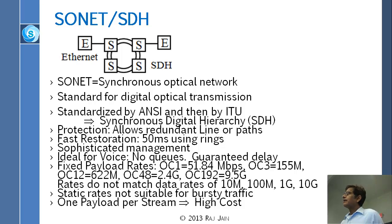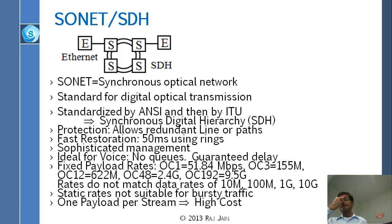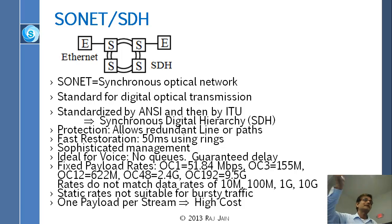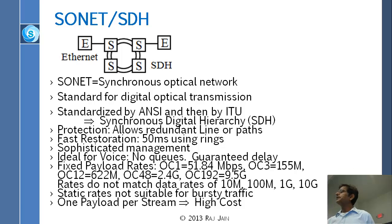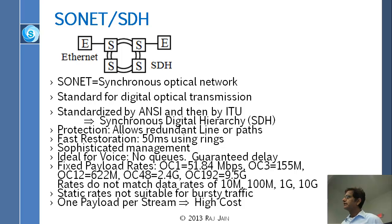The rates are multiples of 51.84 megabits. OC1 is 51.84, OC3 is 3 times that which is 155, OC12 is 12 times 51 which is 622, and so on. A useful trick: instead of 51.84, just remember 50. So when somebody says OC12, you say 622 because 50 times 12 is around 600. For OC192, 192 divided by 2 is 96, so we know it is 9.6 gigabit. OC3 is 155, 622, and so on.